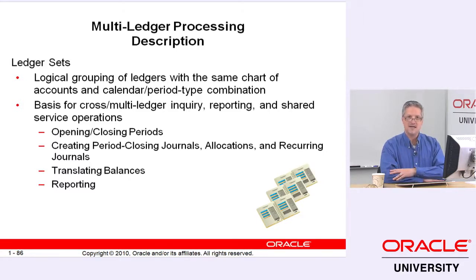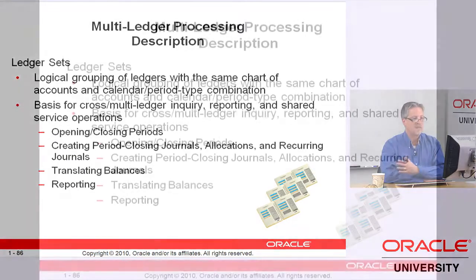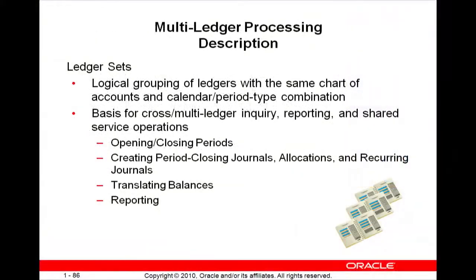You can do some things across all of them at the same time — simultaneously — like opening periods, closing periods. You can create closing journals, mass allocations, recurring journals, and you can do translation of their ending balances before you consolidate.